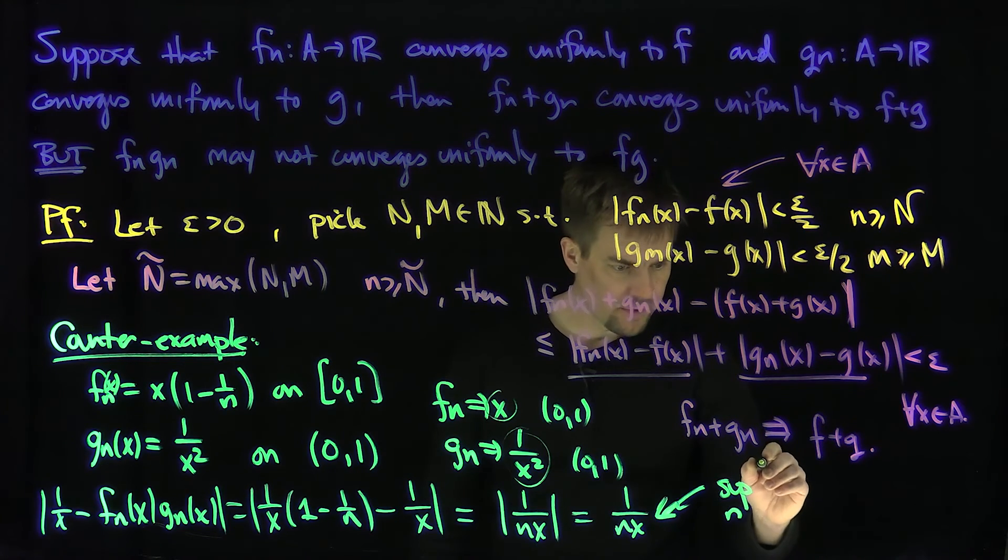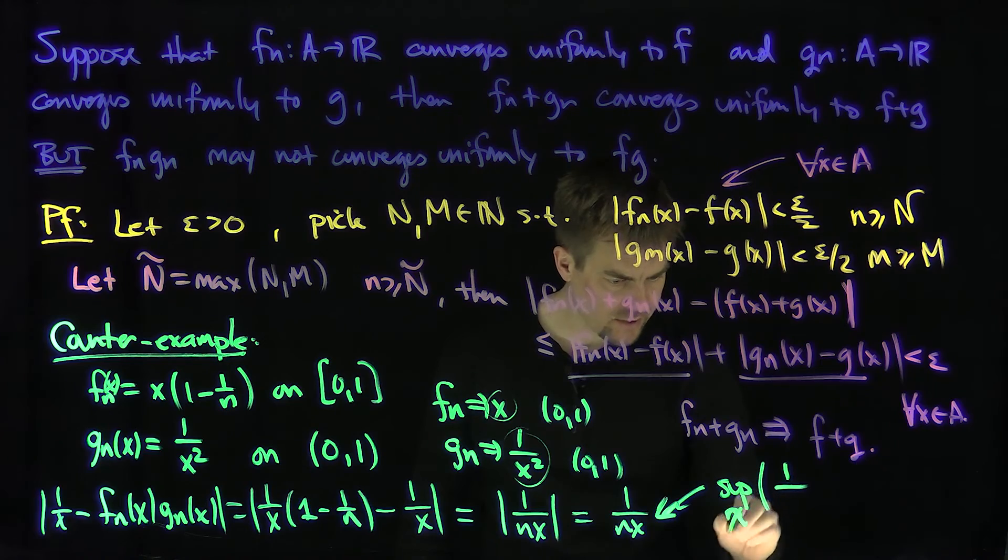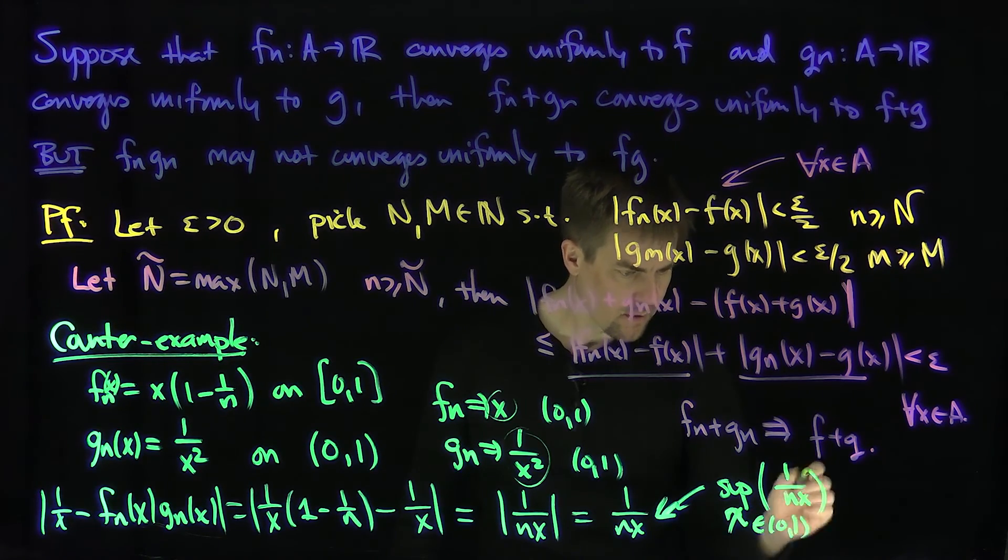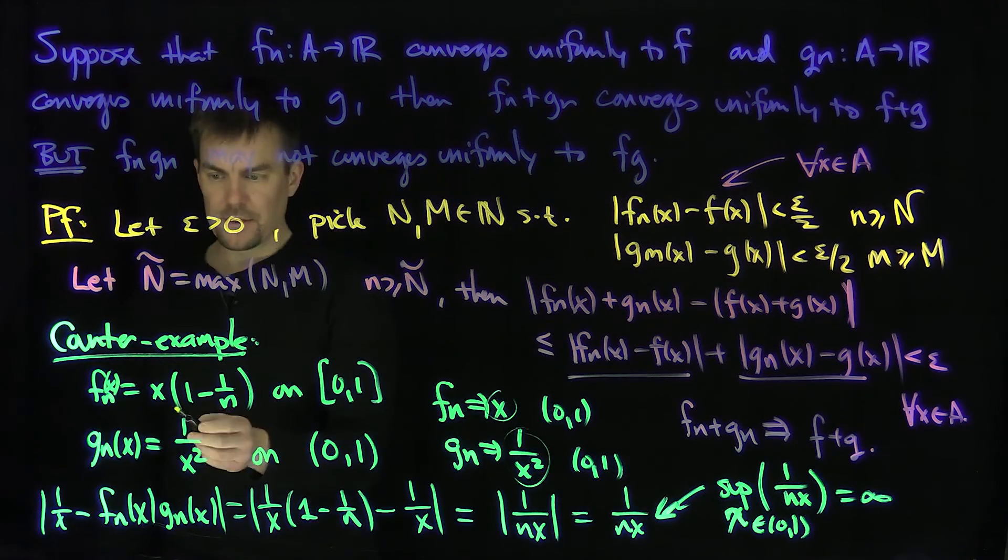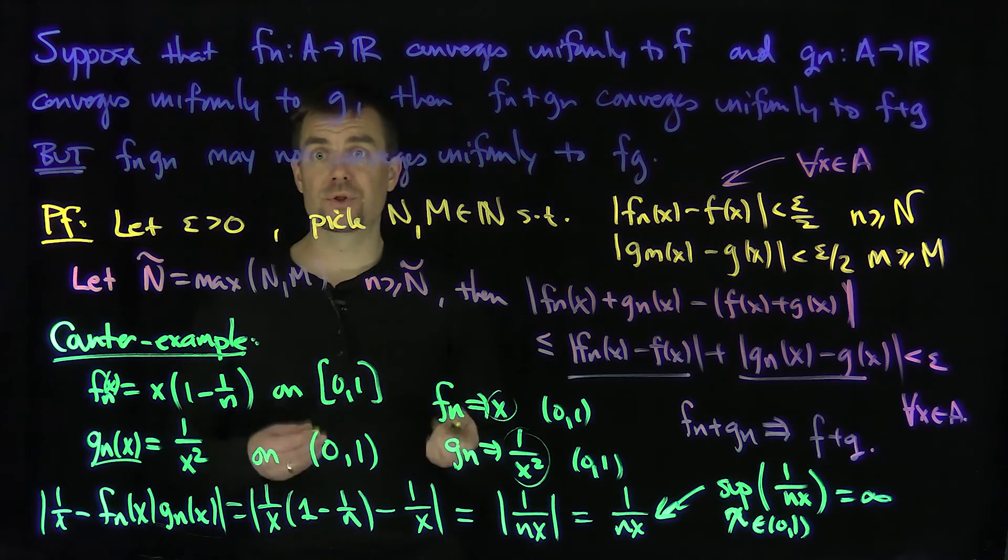The supremum over x in the interval (0,1) is infinite for every N, and so that proves that these Fn times Gn do not converge uniformly to F times G, which is the limit.